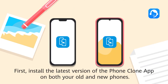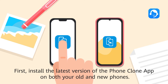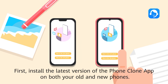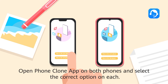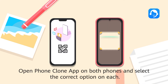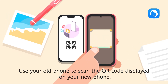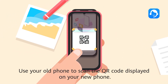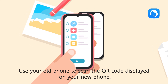First, install the latest version of the PhoneClone app on both your old and new phones. Open the PhoneClone app on both phones and select the correct option on each. Use your old phone to scan the QR code displayed on your new phone.